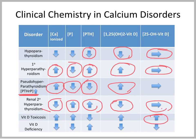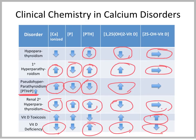In vitamin D deficiency, you'll have lack of intake so 25-hydroxyvitamin D will be down, and lack of activation because there's not enough precursor to be activated — even though PTH is sensing the problem of lowered ionized calcium and lowered phosphate. So in vitamin D deficiency, diagnosis would be made by measuring either 1,25-hydroxyvitamin D or 25-hydroxyvitamin D.